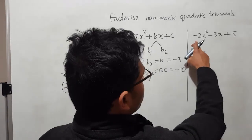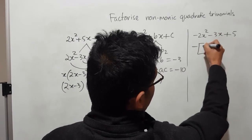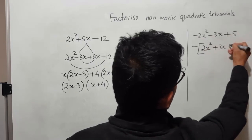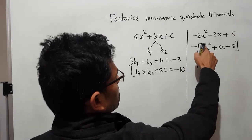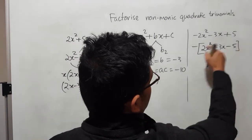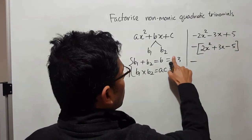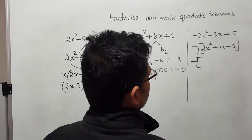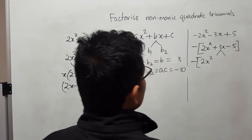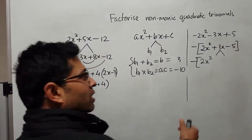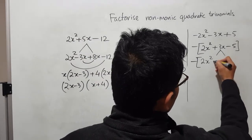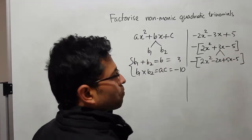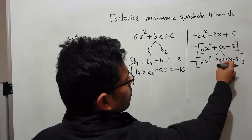An alternative approach: since there is a negative at the front, we can take negative as a common factor. This is not required, but it avoids a negative leading coefficient. Taking negative out, both terms inside become positive — and the new expression inside becomes 2x squared plus 3x minus 5. Now b is 3 and ac is still minus 10. We break it as minus 2x plus 5x minus 5, because plus 5x minus 2x gives plus 3x, and their product is minus 10.